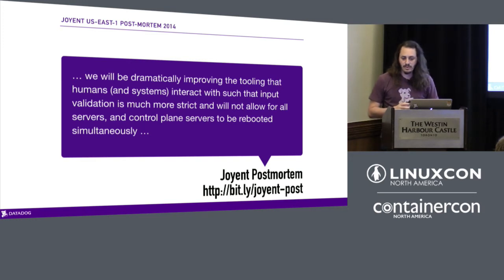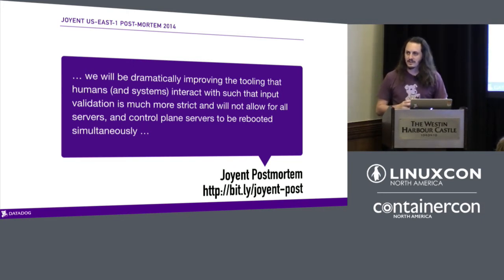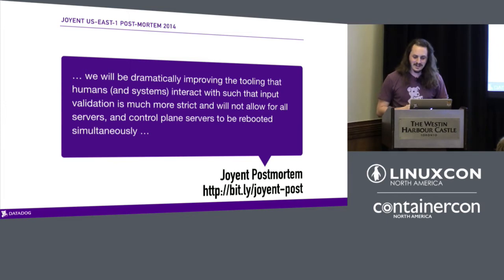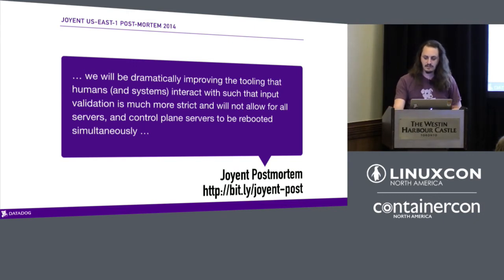The tooling should have had more validation — it should have checked that you actually provided the expected arguments rather than blindly doing what it was told. The lessons were not about educating or chastising the engineer. As they call out in their blogs and postmortems: the guy already felt bad. He was already beating himself up before he could stop the command from running. There's no win in making him feel worse. You can't prevent typos — we're all going to make mistakes. You have to make tools that prevent those mistakes from cascading. That's what they focused on — how to ensure this won't happen again from a tooling perspective.